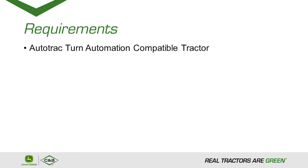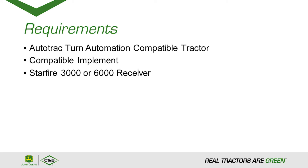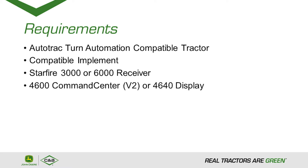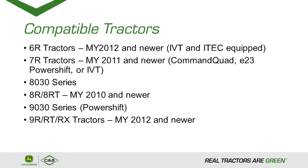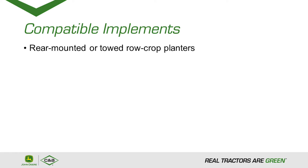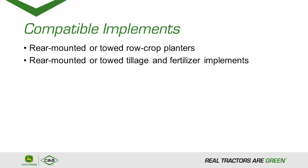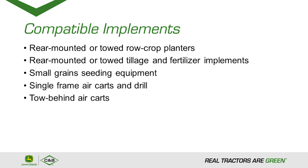What does it take to make Auto-Track Turn Automation work? You need a compatible tractor and implement, a Starfire 3000 or 6000 receiver, a 4600 Command Center with a version 2 processor or a 4640 Universal Display, as well as the Automation 4.0 activation or subscription. Compatible tractors include all current series as well as going back to the 8030 and 9030 series. Compatible implements include rear mounted and towed row crop planters, tillage and fertilizer implements, small grain implements such as carts and drills, and tow-behind air carts.